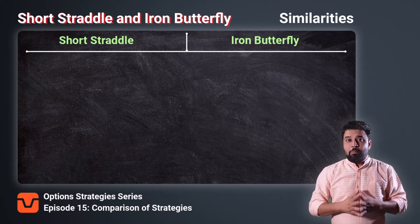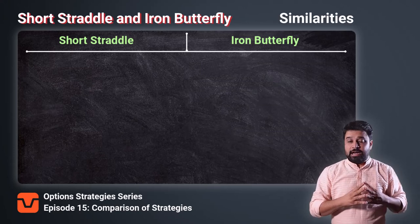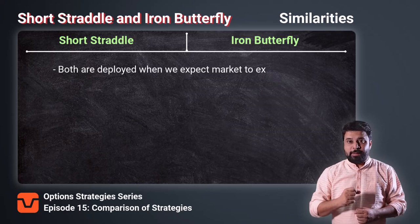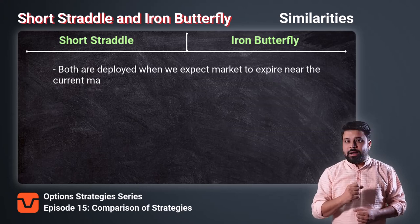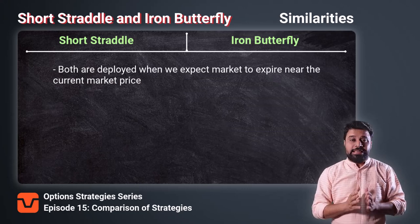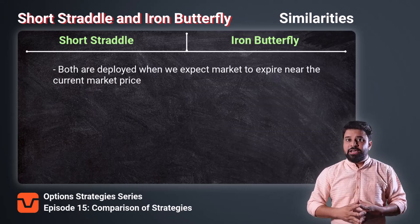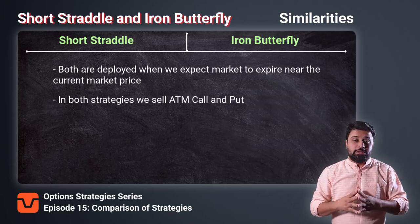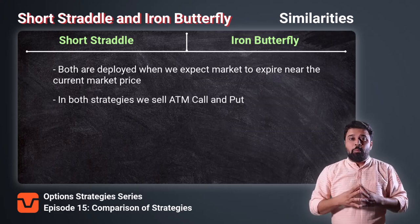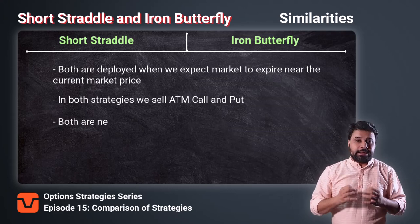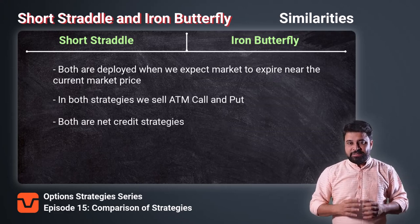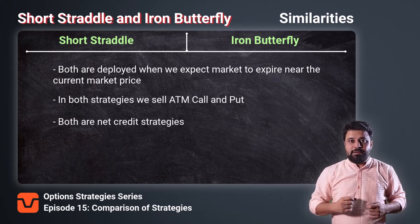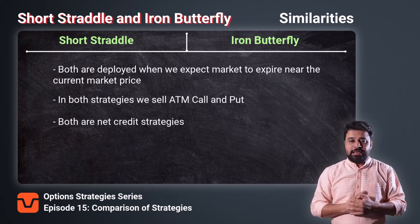Now let us look at the similarities and differences between these two strategies. First, the similarities. Both strategies are deployed when the underlying is going to expire at the current market price or the ATM levels. You sell ATM calls and ATM puts in both these strategies. Both are net credit strategies, which means you will receive the premium when you deploy these strategies.